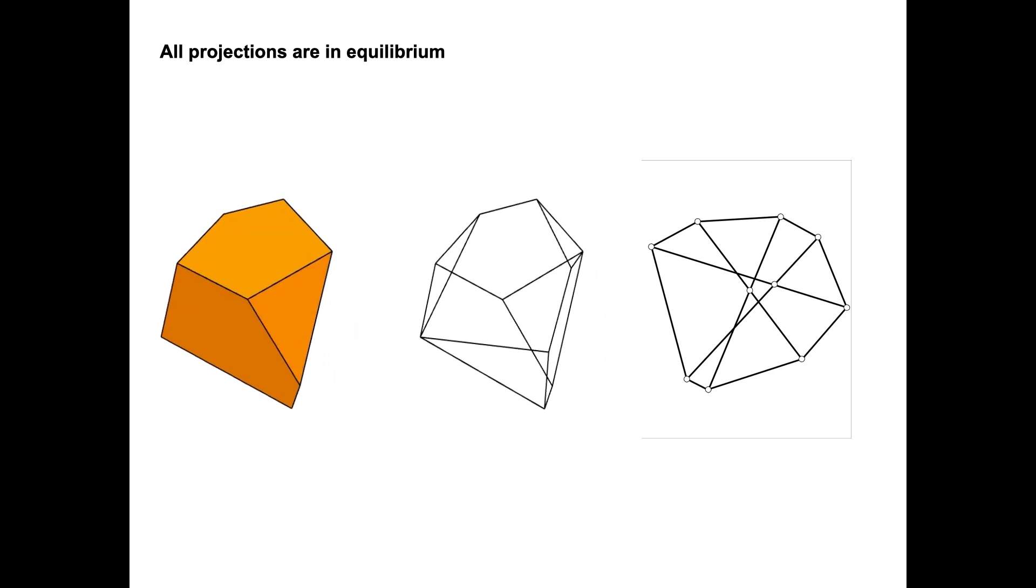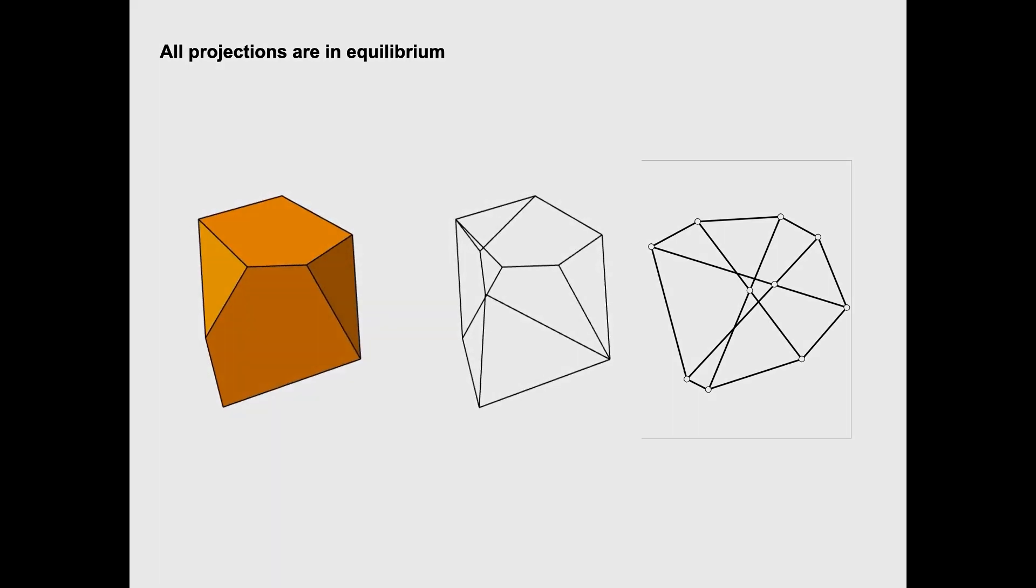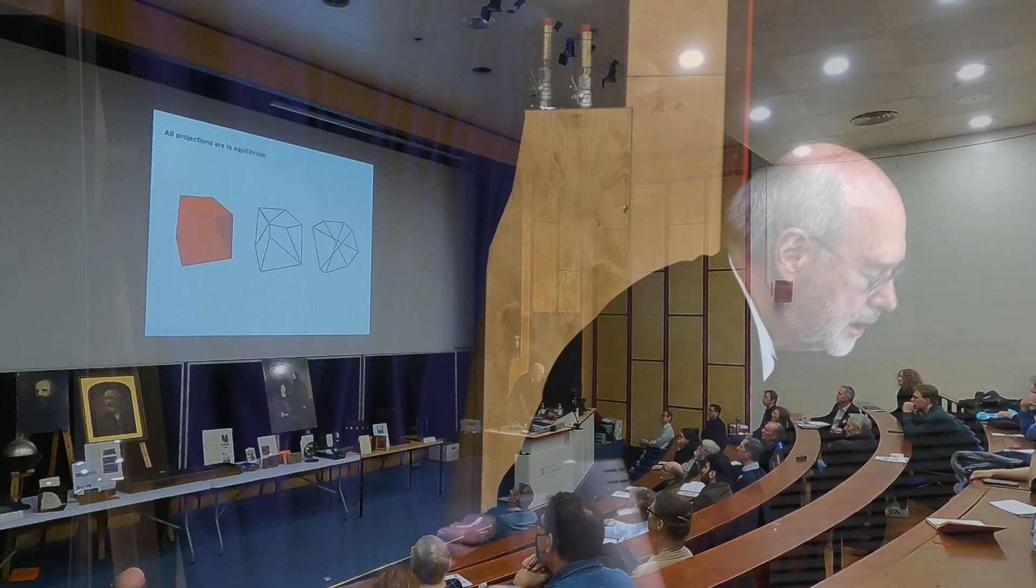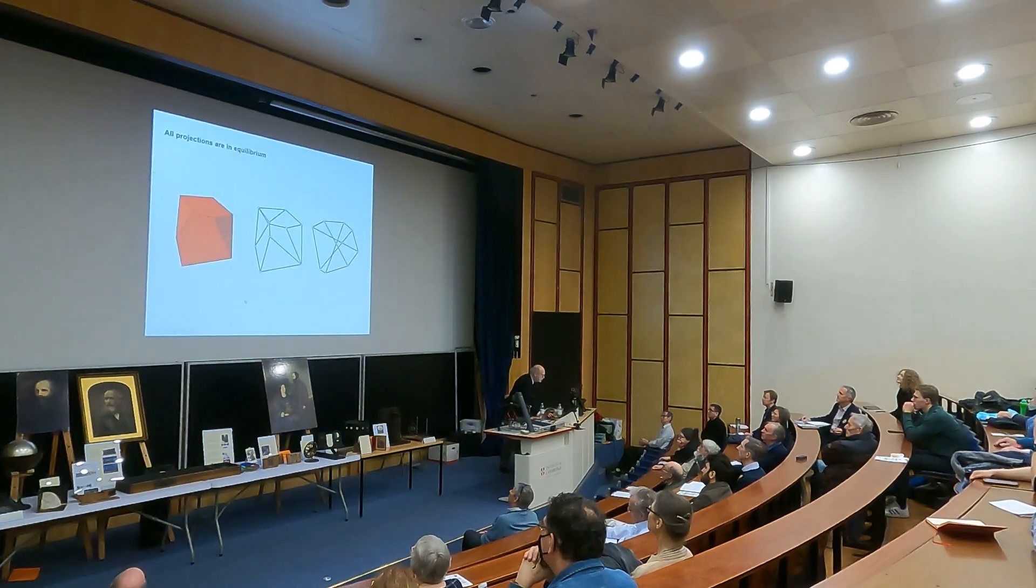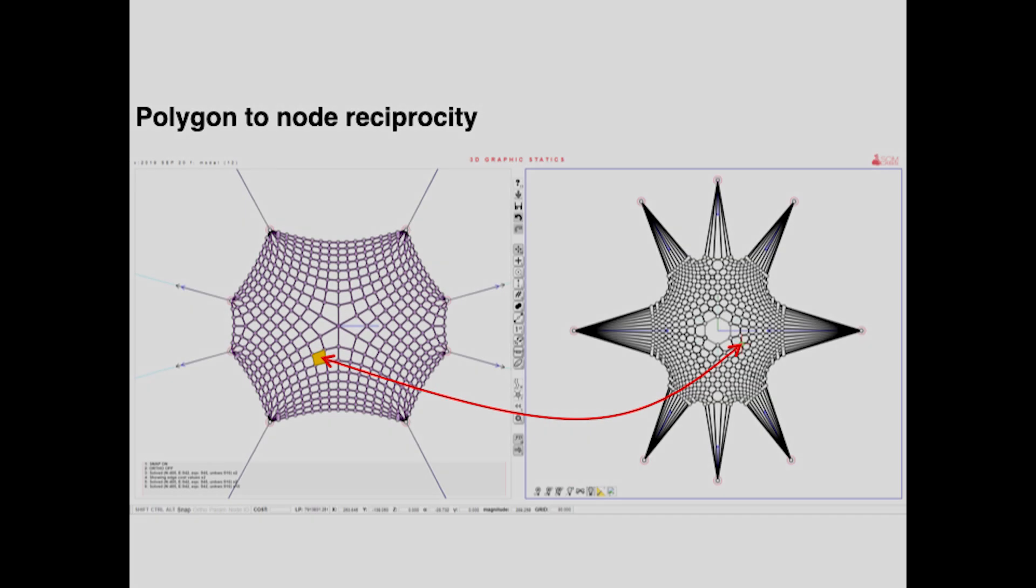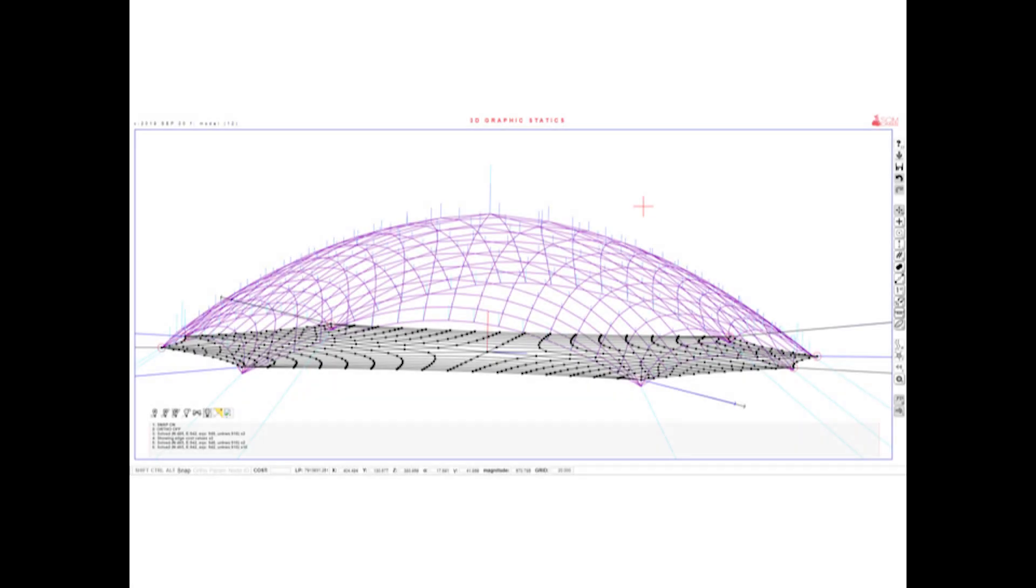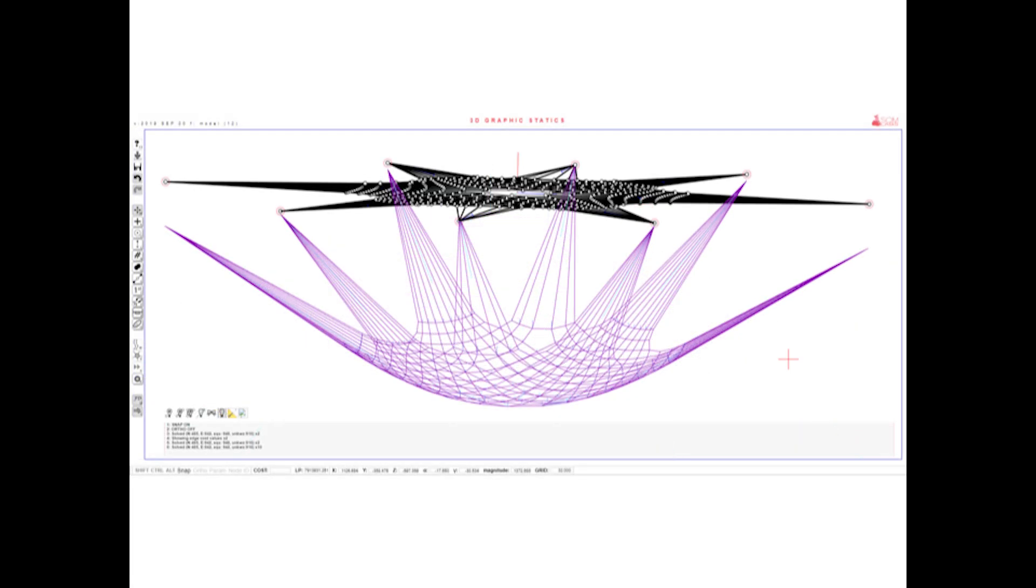In a seminal paper he wrote in 1870, now called Reciprocal Figures, Frames and Diagrams of Forces - when they said frame, we would call it a truss - he had this thing where you have points and planes that are reciprocally polar in the ordinary sense with respect to a paraboloid of revolution. He had this geometric projective geometry transformation between these two figures, where every plane maps to a point, and every point maps to a plane.